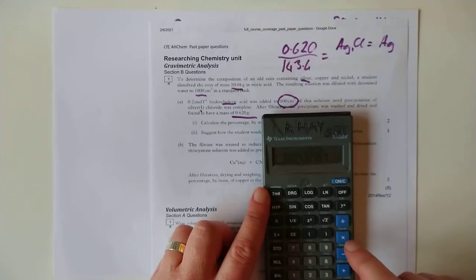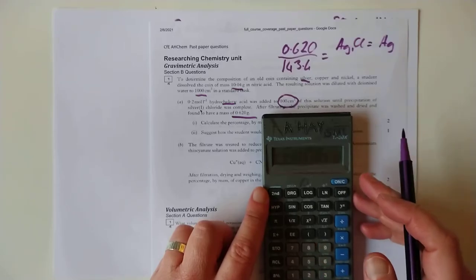If there had been a 2 here, if it was Ag2Cl, you'd need to take that number there and multiply it by 2. That would be the moles of silver.